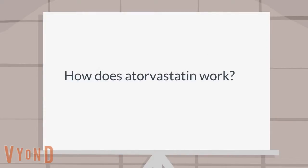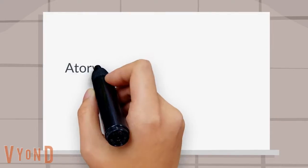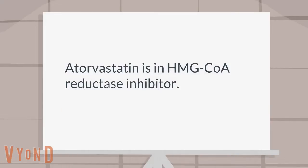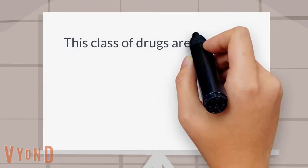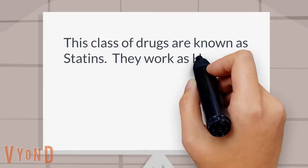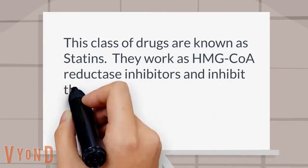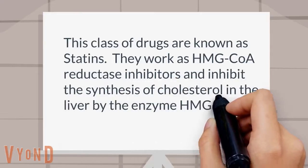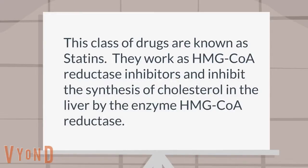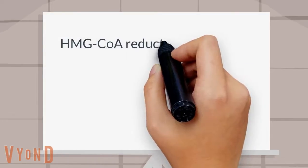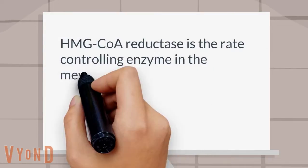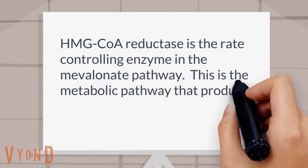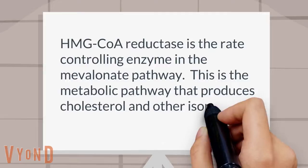How does atorvastatin work? Atorvastatin is an HMG-CoA reductase inhibitor. This class of drugs are known as statins. They inhibit the synthesis of cholesterol in the liver by the enzyme HMG-CoA reductase. HMG-CoA reductase is the rate-controlling enzyme in the mevalonate pathway, which is the metabolic pathway that produces cholesterol and other isoprenoids.